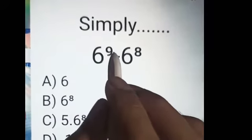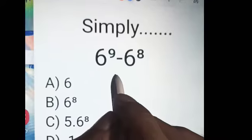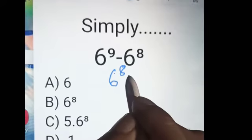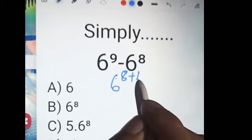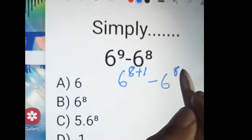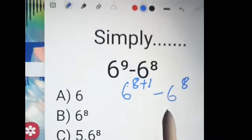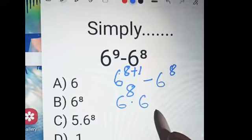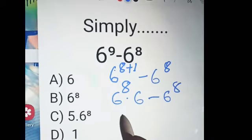Simplify 6 to the power 9 minus 6 to the power 8. It becomes 6 to the power 8 plus 1 minus 6 to the power 8, which is 6 to the power 8 into 6 minus 6 to the power 8.